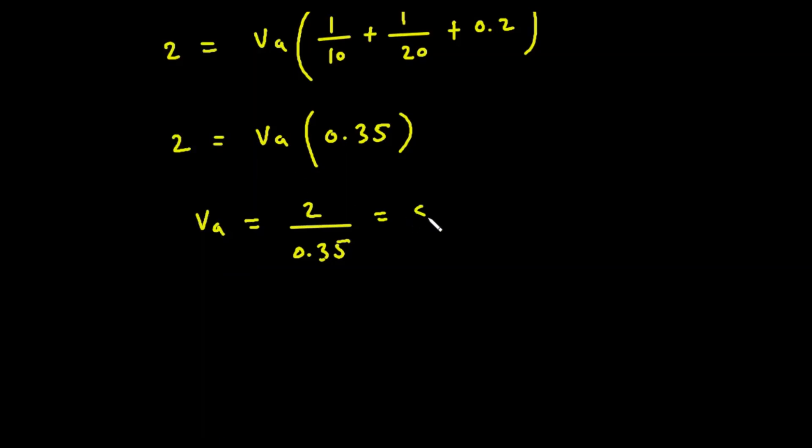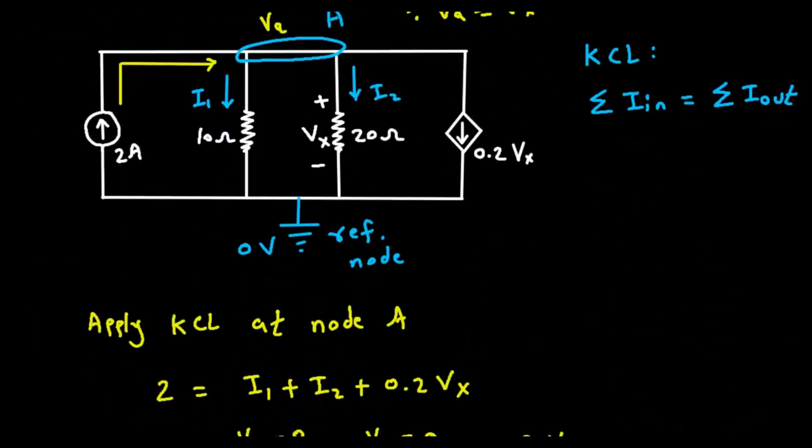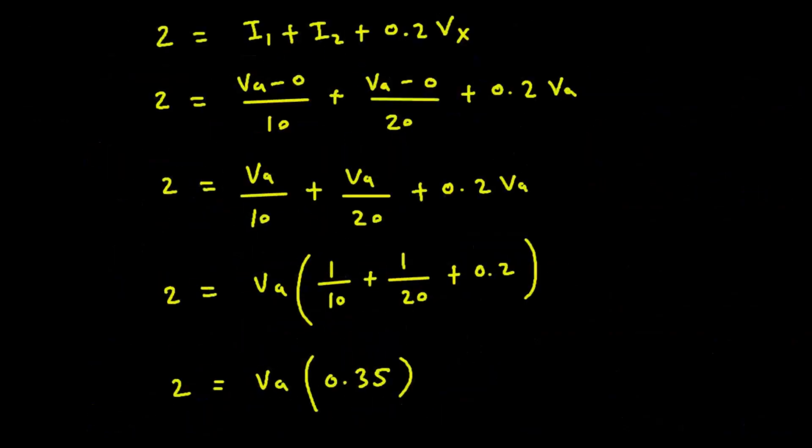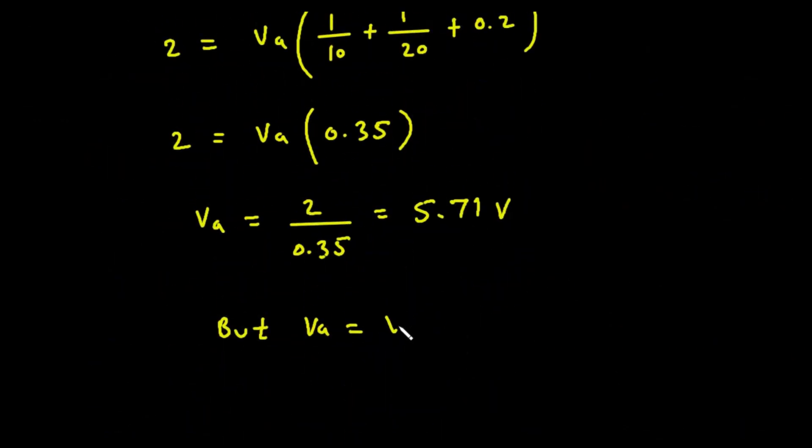5.71 volt. But we know that Va is equal to, here we can see Va is equal to Vx. But Va is equal to Vx, so therefore Vx is equal to 5.71 volt. So this is the final answer for this problem.